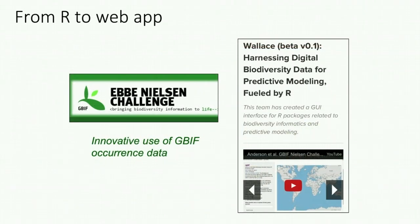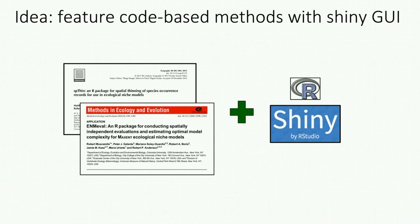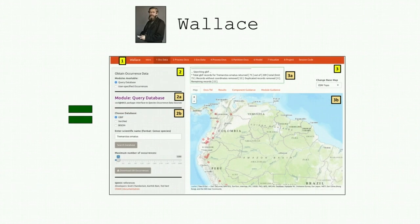Back in 2015, Rob Anderson, a couple of collaborators and I decided to apply to the Ebbe Nielsen challenge led by GBIF, whose theme for that year was innovative use of GBIF occurrence data. We made the first version of Wallace and ended up getting to the finalist stage, which was encouragement for us. The idea behind the first implementation was to feature code-based methods with a GUI. We used an R package called Shiny, which allows users to make interactive web applications, making it easy to integrate all the other R tools we wanted. Here is an image of the interface of the first version of Wallace with some labels from the paper we published.